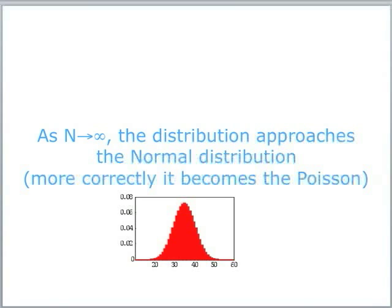More correctly for the case we're looking at, because the score is going to be a discrete number, it becomes a Poisson distribution.